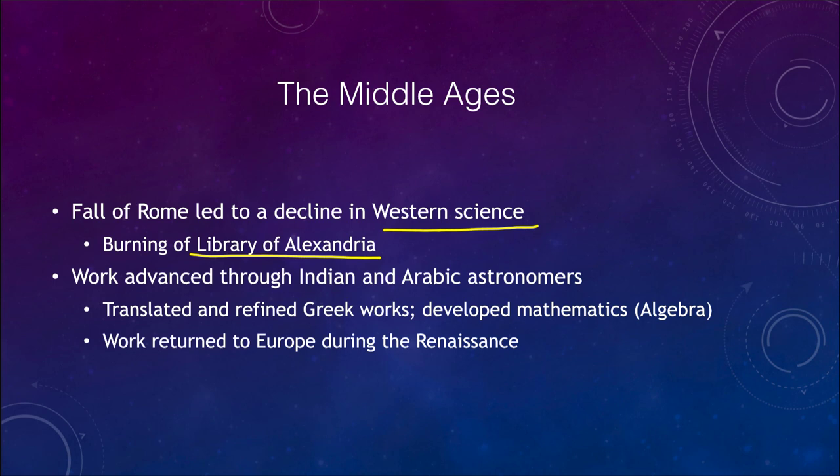However, even during this time, work advanced through Indian and Arab astronomers, who did a lot of work, who translated the works of Ptolemy and others into their languages, and then refined them making them better. And they continued to develop different types of mathematics, the Greeks, everything was done geometrically, and algebra was developed by Arab astronomers as better ways of being able to calculate. And this work then returned to Europe during the Renaissance, which is what we'll look at in the next video, where we will talk about how the Renaissance astronomers were able to put this all together and come up with a new model that did not have the Earth at the center, but instead put the sun at the center of the universe.